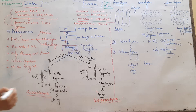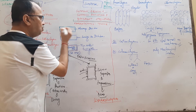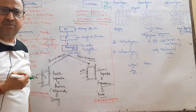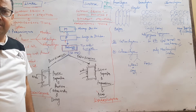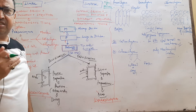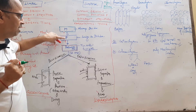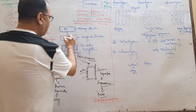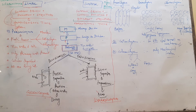Meristematic tissue always has the tendency to divide — continuous cell division takes place and cells divide to produce two, four, eight and more cells. But when there is no cell division, it becomes permanent tissue — cells cease to divide. Permanent tissue has three types: parenchyma, colenchyma, and sclerenchyma.